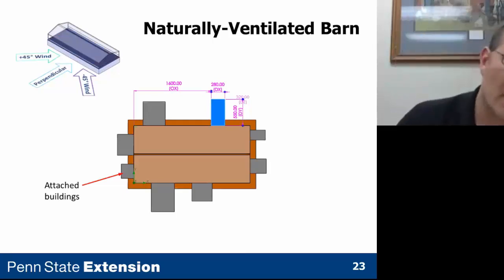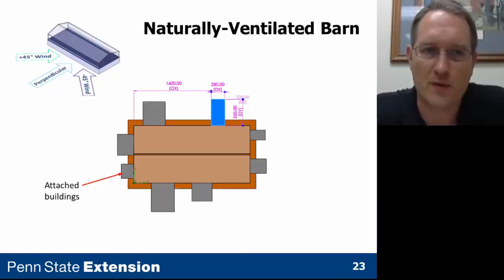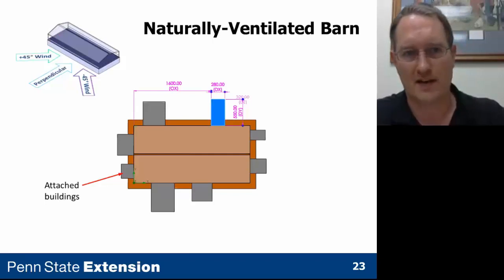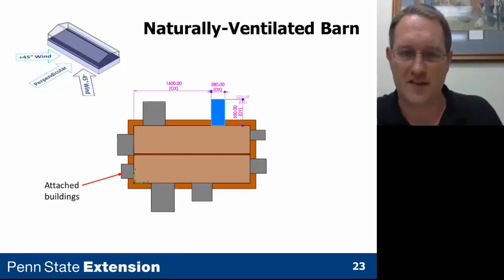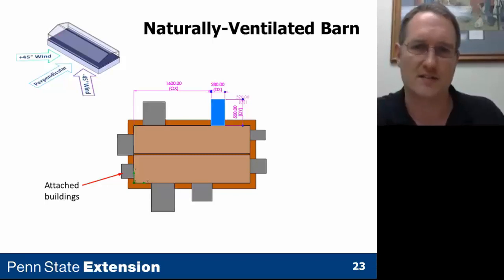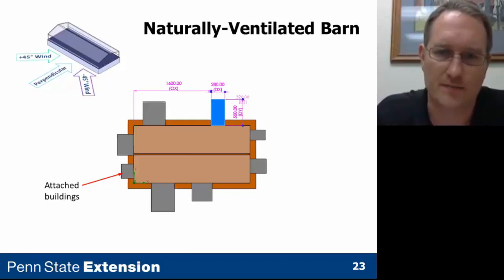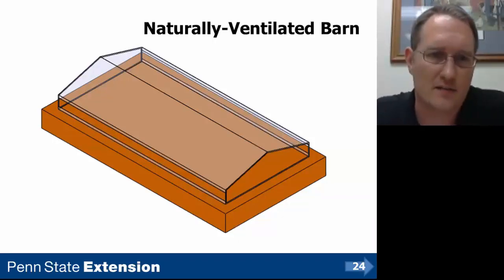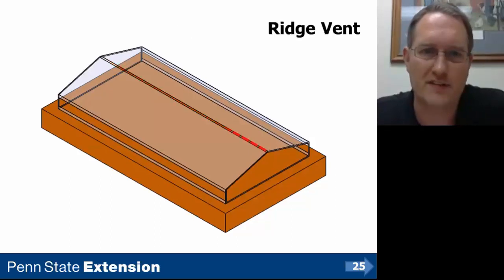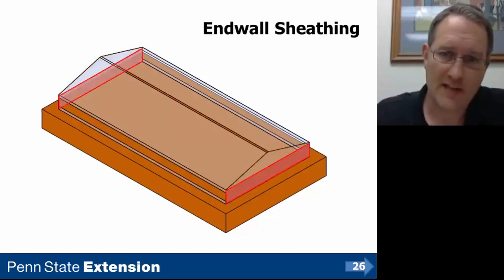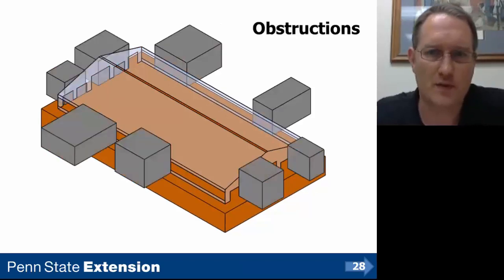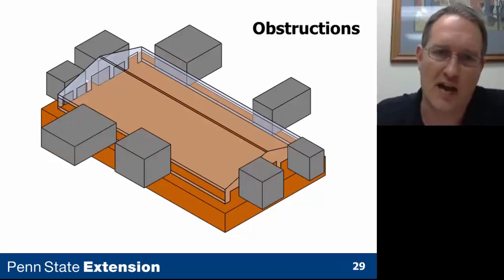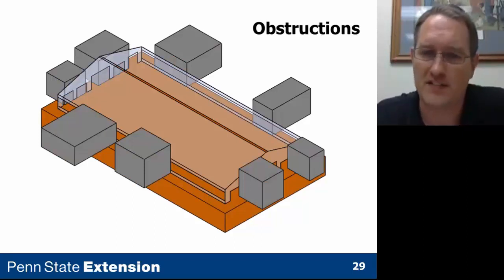For the naturally ventilated barn, the ideal situation is when wind is perpendicular to the sidewall. The online tool automatically runs two simulations — by default, wind at 45 degrees positive and negative from the perpendicular direction — simulating worst case scenarios. You can define curtain sidewall height and opening width, include a ridge vent, gable sheathing, end wall sheathing, and doors. Two buildings can also be attached on each wall, such as a silo or shop that would obstruct airflow from the wind, to see how that changes results.